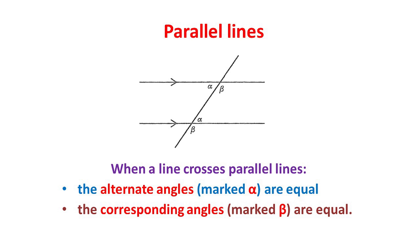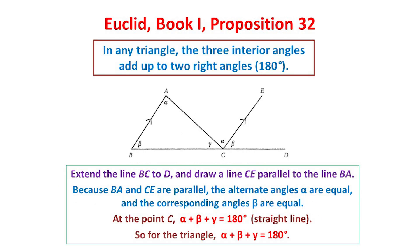Here is a result about parallel lines. If a straight line crosses a pair of parallel lines, marked here with arrows, then the two angles marked alpha are called alternate angles and are equal. Also, the two angles marked beta are called corresponding angles and are equal. We'll now use these to prove that the angles of any triangle add up to 180 degrees. This result appears in Book 1 as Proposition 32. Starting with the triangle ABC, we first extend the side BC to a new point D. We next draw a line from C, parallel to the line BA, to a new point E.